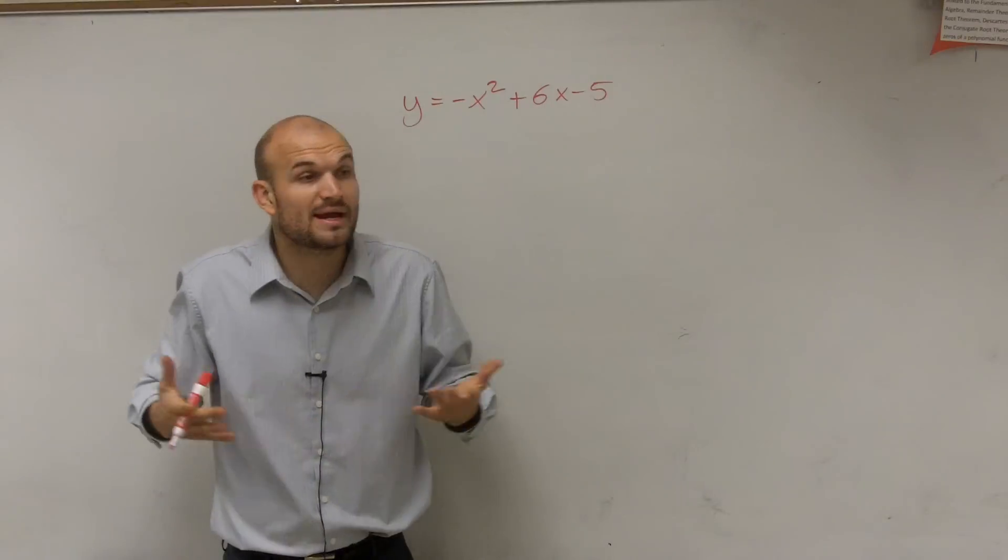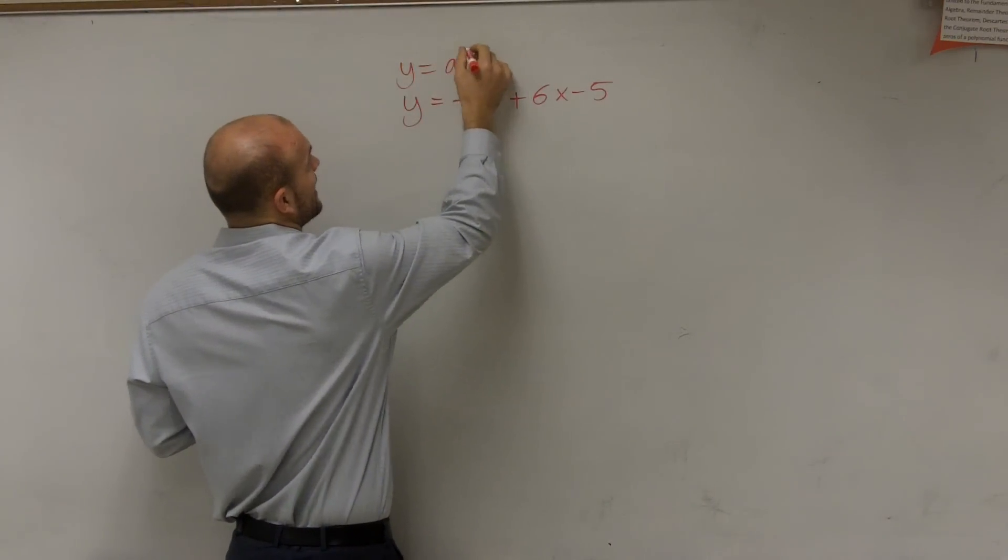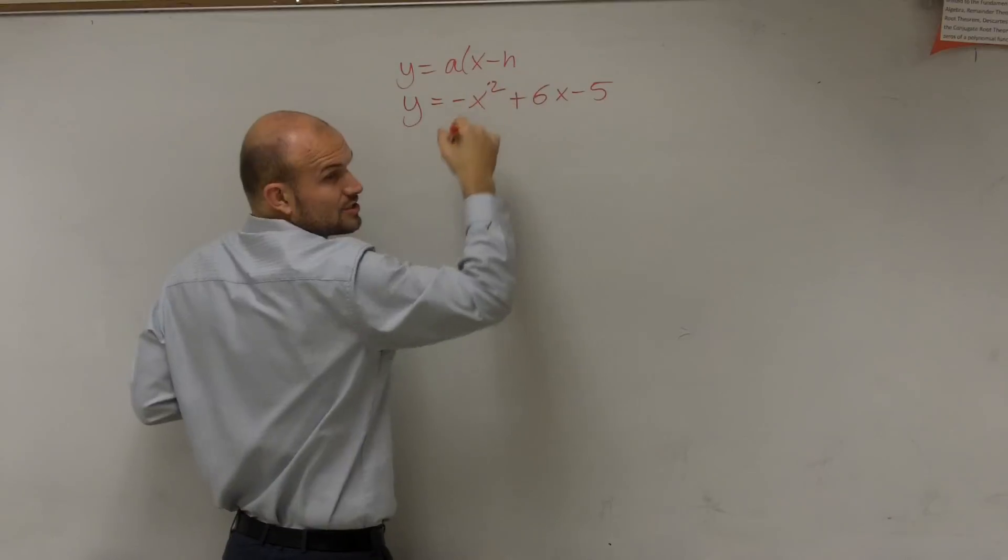So by graphing it into vertex form, we have to put it into vertex form, which is y equals a times x minus h.